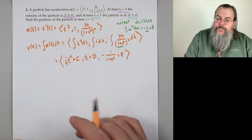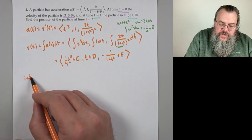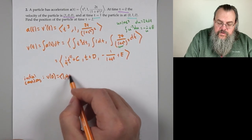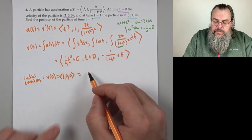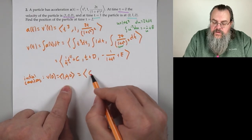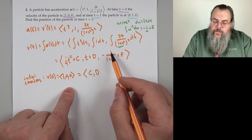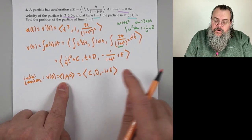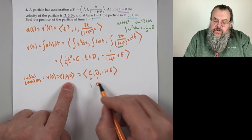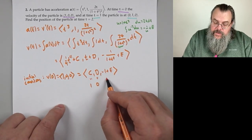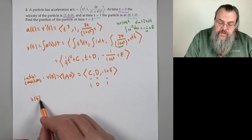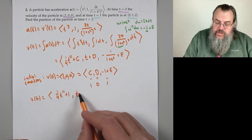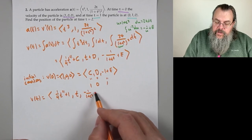Using the initial condition v(0) = (1, 0, 0): plugging in t = 0 gives ⟨0 + c, 0 + d, −1 + e⟩ = ⟨1, 0, 0⟩. Matching components: c = 1, d = 0, e = 1. So v(t) = ⟨¼t⁴ + 1, t, −1/(1+t²) + 1⟩.